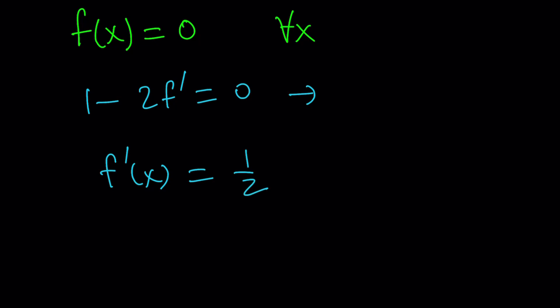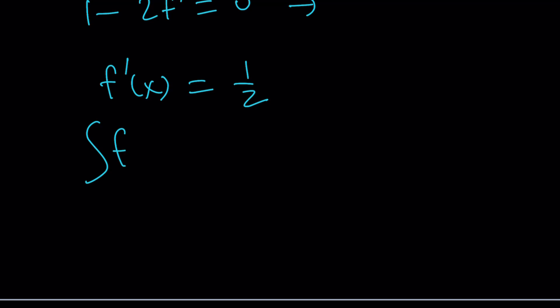Now, what are you going to do? You're going to integrate both sides. So integral of f prime dx equals integral of 1 half dx. When you integrate f prime, you're going to get f because the derivative and integral cancel out. So you end up with f(x) and the dx magically disappears.